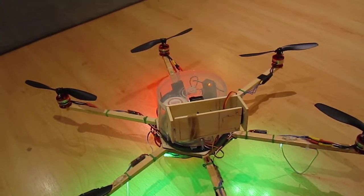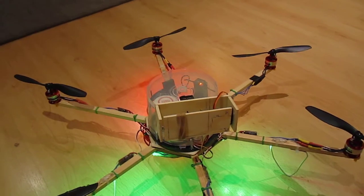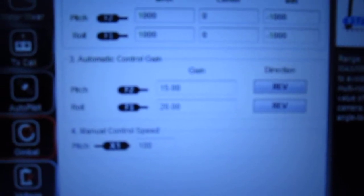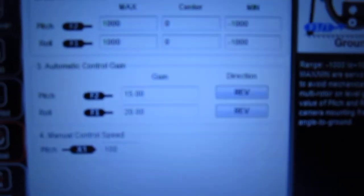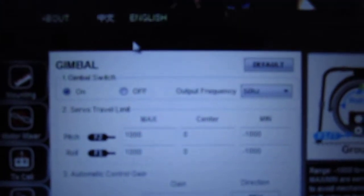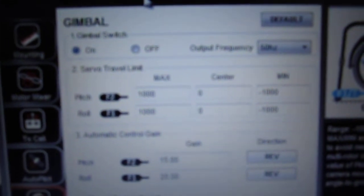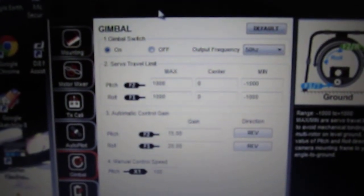A quick bit of setting up and enabling in the assistant software, which I've basically got set. You may not be able to see that, but the pitch is 15 and the roll is 20 on the gains. I've had to reverse both, although I may change that when I mount it permanently. I haven't touched the output frequency or the travel limits on the setup.